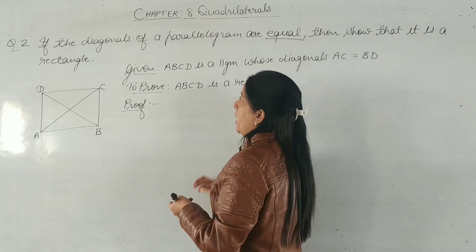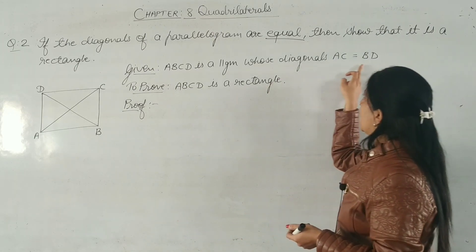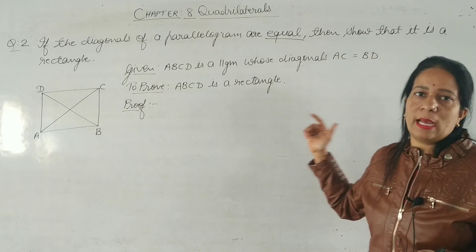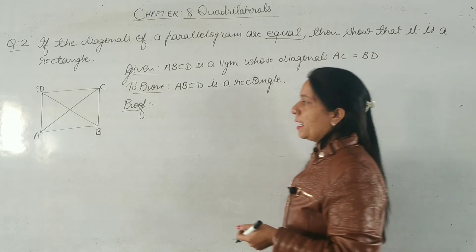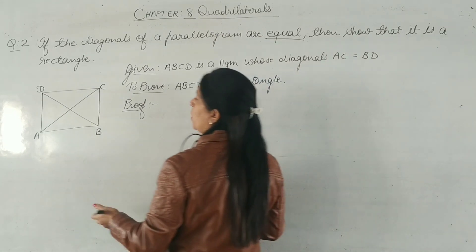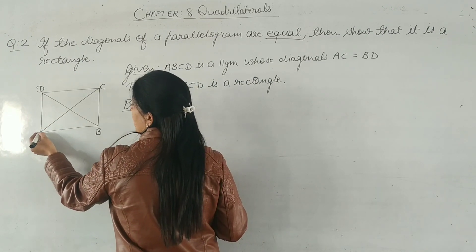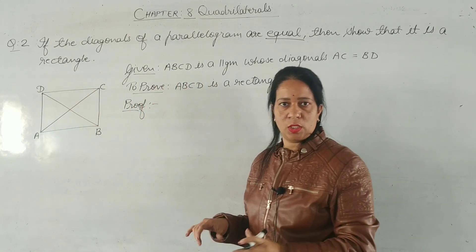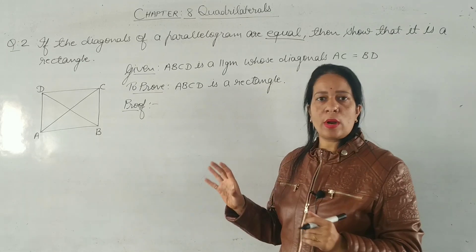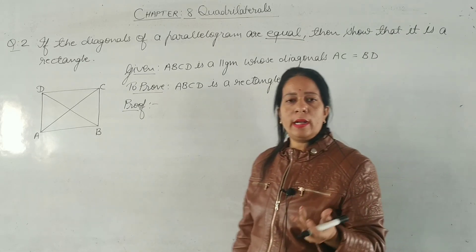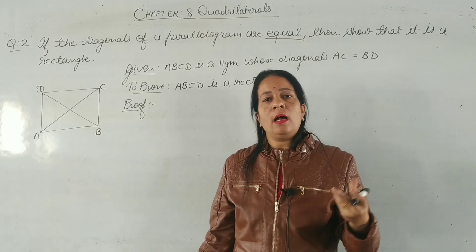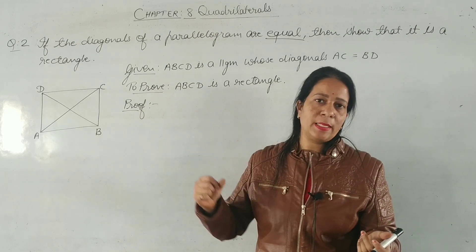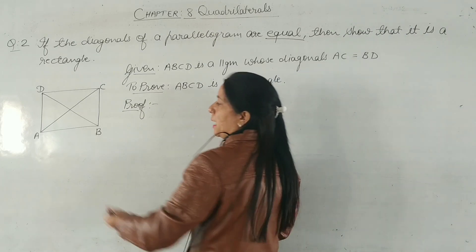We have one thing given — the diagonals are equal. What we need to do is make the angles equal to right angles. To do this, we take two triangles with a common base. If we take triangles ABC and ABD as congruent triangles, then by CPCT all corresponding parts will be equal.